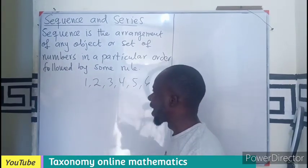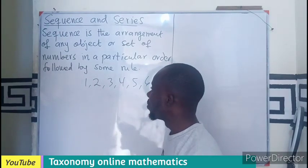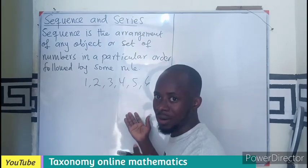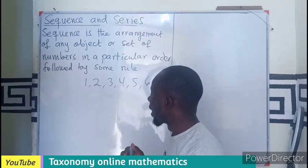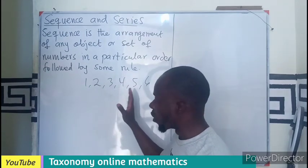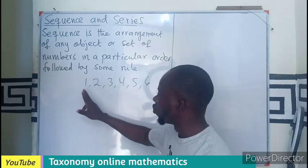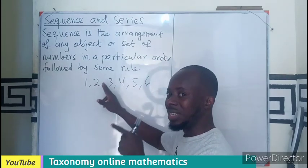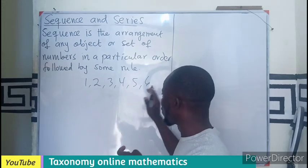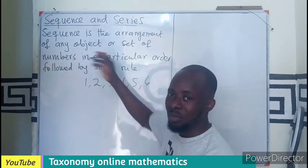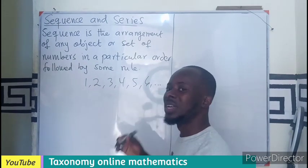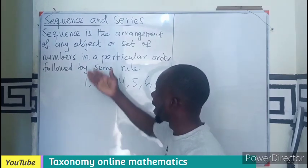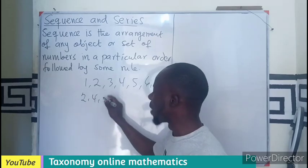We can consider the counting numbers as an example of a sequence, because it's a set of numbers arranged in a particular order, and there is an observed rule: adding one to the previous term gives the next term — one plus one gives two, two plus one gives three, and so on. This is an example of a finite sequence, where we know all the elements. It could also be infinite, where the last element is not known. Counting numbers or natural numbers are an example of such a sequence.